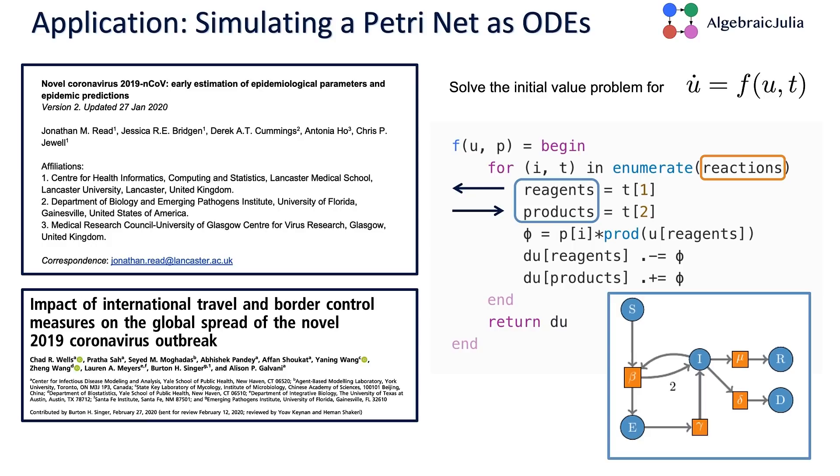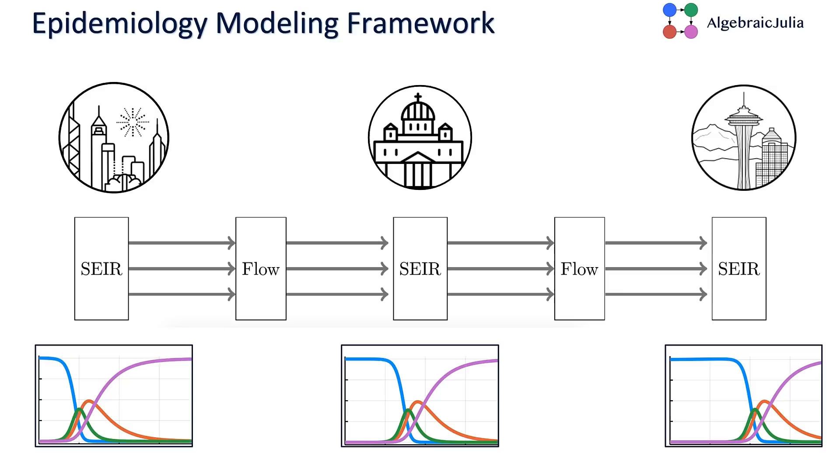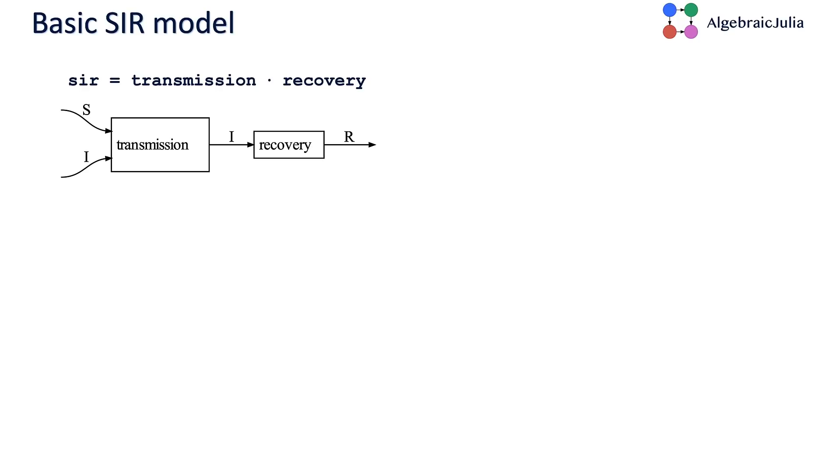Our real-world application is going to be simulating a pandemic using Petri nets and differential equations. Our model is going to have three components, three cities. The disease is going to start in one city and then spread linearly down a chain. There's going to be a compartment model for each component, and then a flow from component to component.